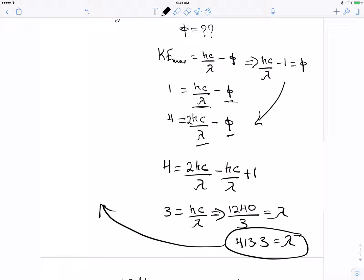Then we plug it back into one of these equations. So 1240 divided by 413.3 minus 1 equals Φ. I got the answer at approximately 2 electron volts.